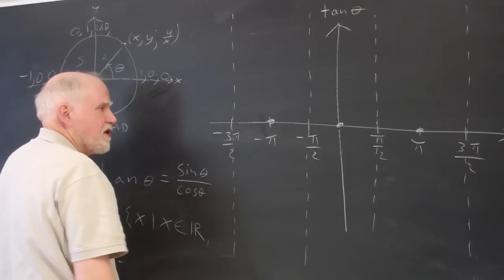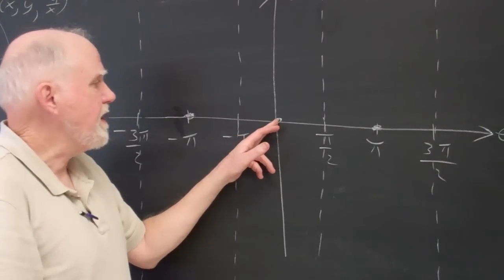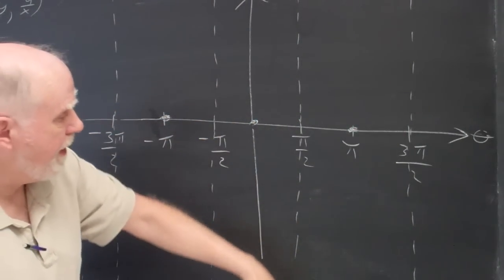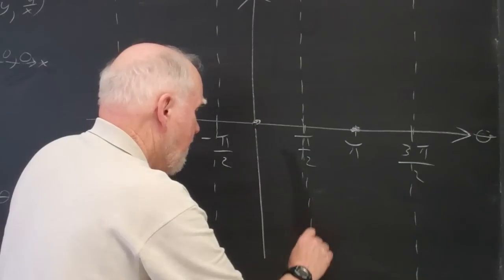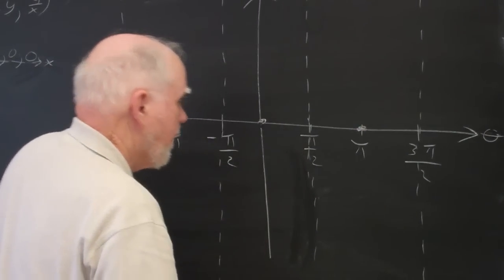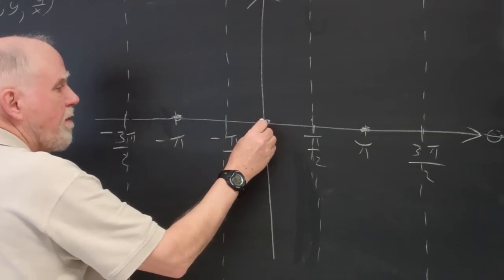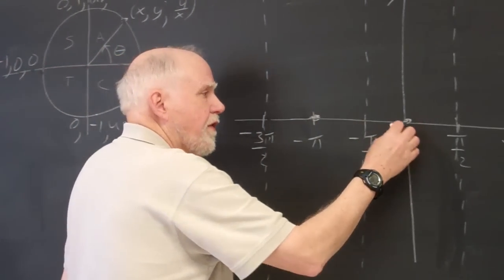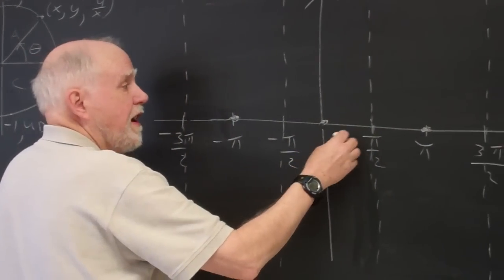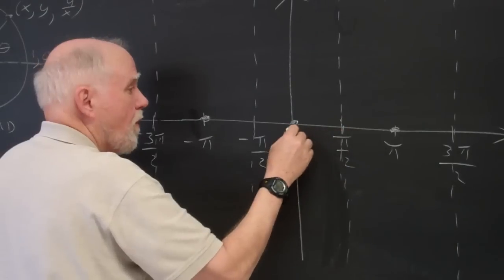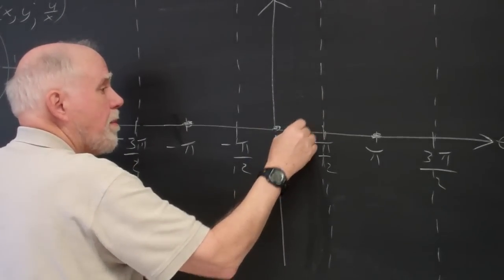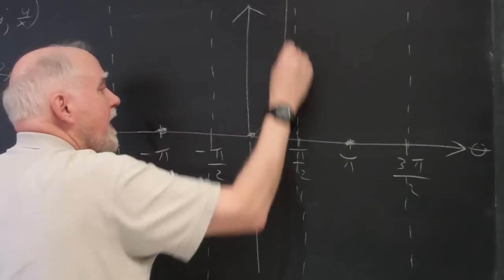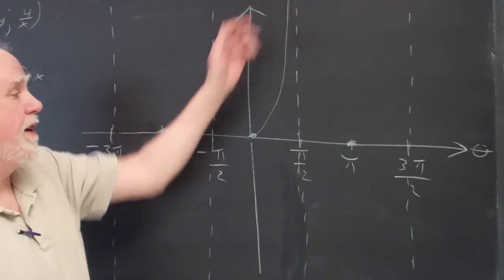So here's what we know: the tangent is zero at the origin, and we either have to go to infinity one way or the other. From zero to pi over two, all trig functions — sine, cosine, and tangent — are positive in that first quadrant. So the numbers are above the theta axis, and it has to go up to infinity.